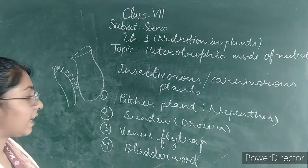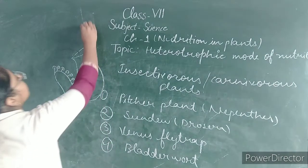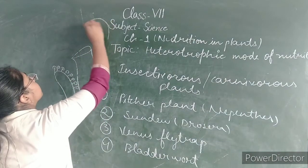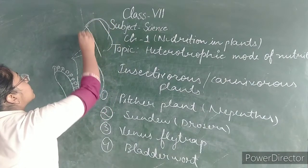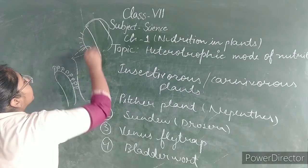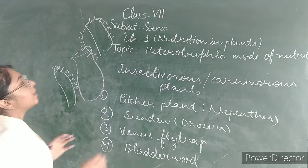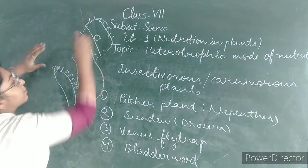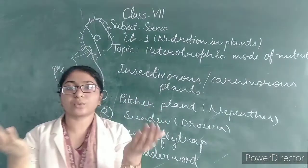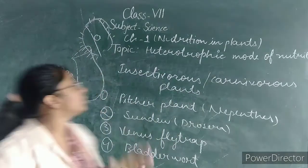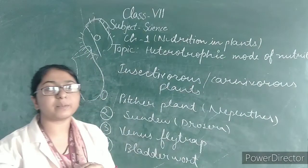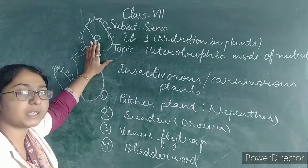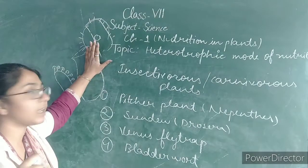The third one is Venus flytrap. Venus flytrap has a different shape like a jaw with pointed teeth. When an insect sits on the inside, the trap closes from both sides and digests the insect. This is how Venus flytrap works.